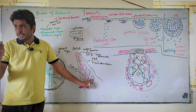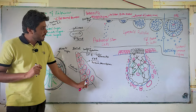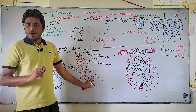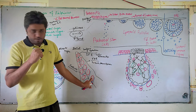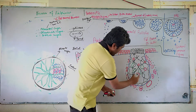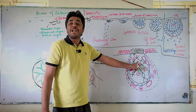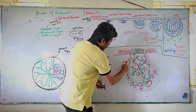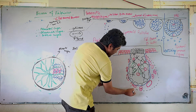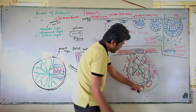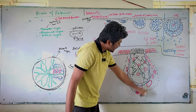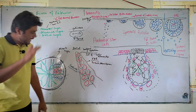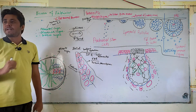Each fold contains many follicles. Importantly, each follicle has two compartments. The central or middle one is known as the medulla, and the outer side — from the blue lining to the black — is known as the cortex.